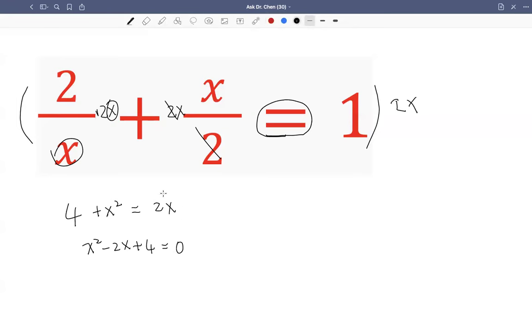I have moved 2x, positive 2x, from the right-hand side to the left. I changed its sign. Always the same to say minus 2x on both sides.